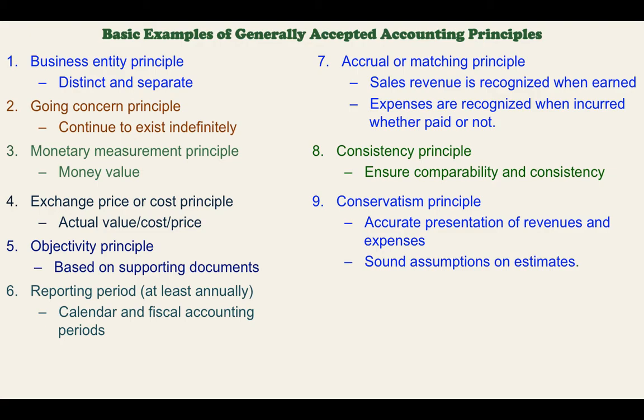Next is the conservatism principle. Conservatism is an accurate presentation of revenues and expenses and providing sound assumptions on estimates. This sound assumption should be based on conservatism. Because there are certain transactions in accounting where you use estimates — like receivables that you cannot collect — you are going to make an estimate because it's not actual. If you are making an estimate, then you have to be conservative.